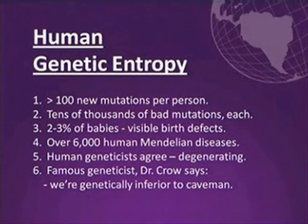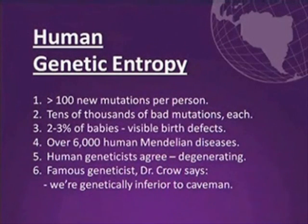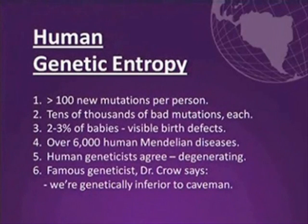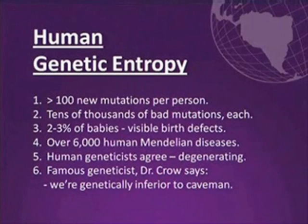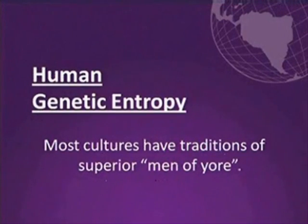If you go to a human geneticist today and ask them whether the human population is genetically degenerating, they will basically universally say yes. They might imagine that increasing natural selection could stop that, but what we're going to learn is that is not true. We can rigorously show that natural selection cannot stop the mutation problem. A very famous geneticist, Dr. Crowe, recently said we are genetically inferior to cavemen. He's a hardcore evolutionist.